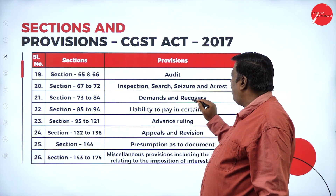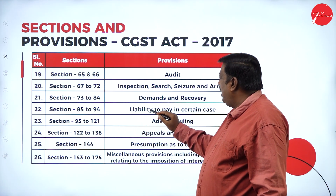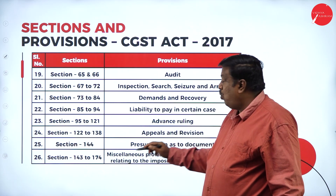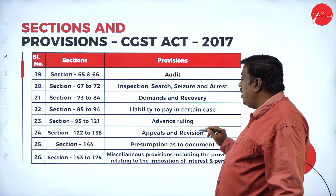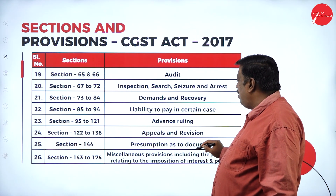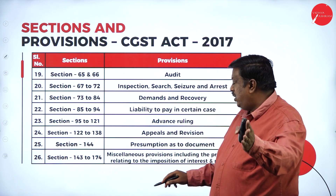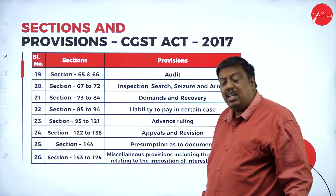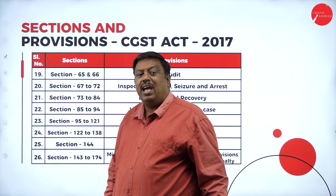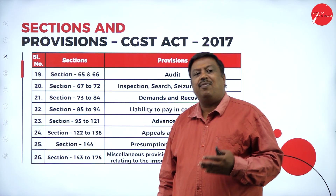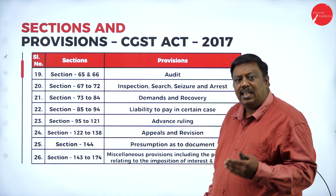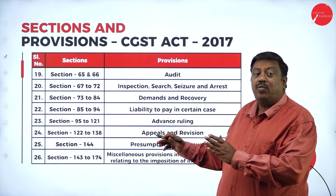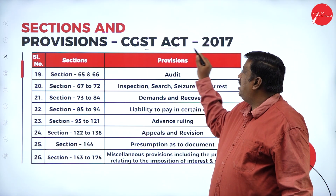Section 65 and 66 cover audit procedures — who audits the records and what must be submitted to the government. Sections 67 to 72 cover inspection, search, seizure, and arrest. Sections 73 to 84 cover demands and recovery. Sections 85 to 94 deal with liability to pay in certain cases. Sections 95 to 121 cover advanced rulings, and sections 122 to 138 cover appeals and revisions. Sections 143 to 174 contain miscellaneous provisions including penalties and interest for late or improper tax payment or non-disclosure.